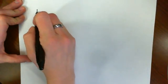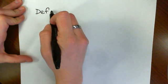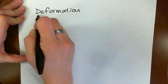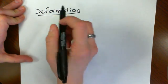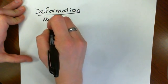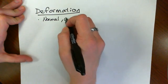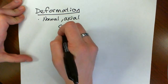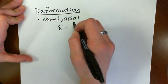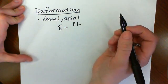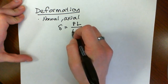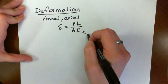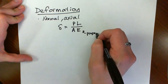This is a reminder that we're talking about deformation for a normal member with axial load. Our deformation is equal to the load times the original length over the cross-sectional area times Young's modulus, which is a property of the material.